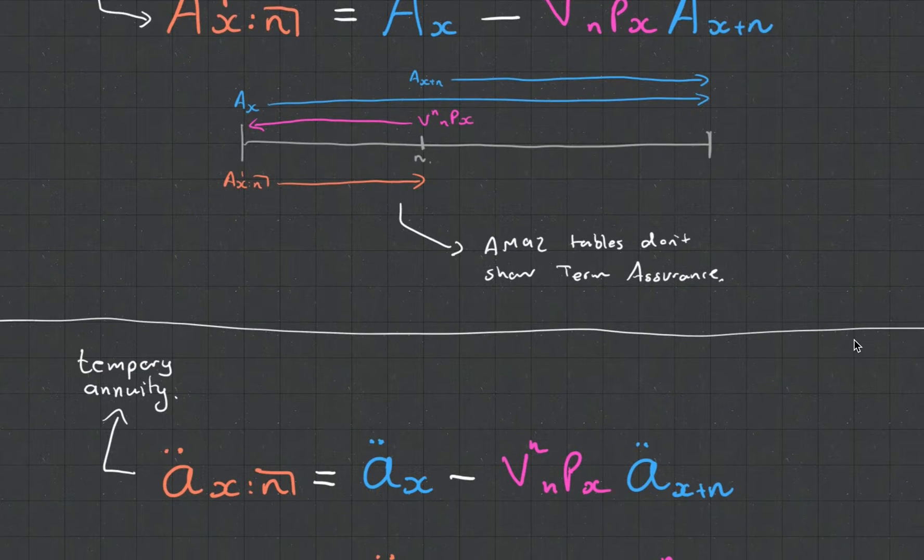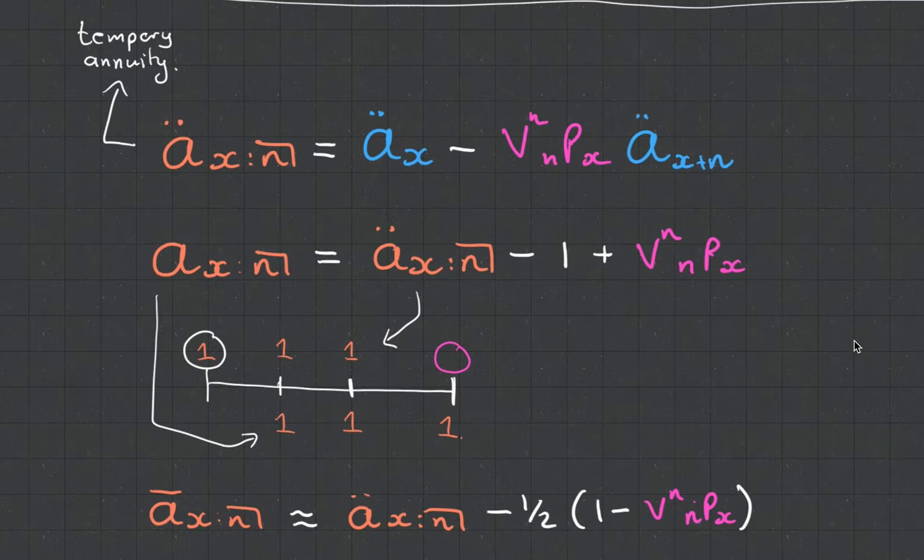And the same thing kind of works when it comes to annuities as well. Term annuity is equal to a whole life annuity subtracted by another whole life annuity with an adjusted age, and then we adjust for force of interest and force of mortality. A very simple example is to look at the difference between an annuity in advance and annuity at the end of the term.